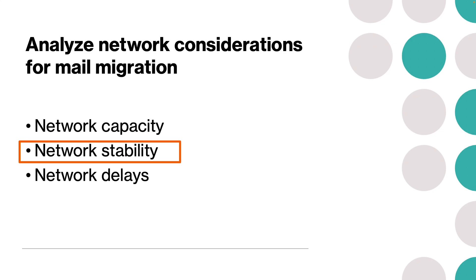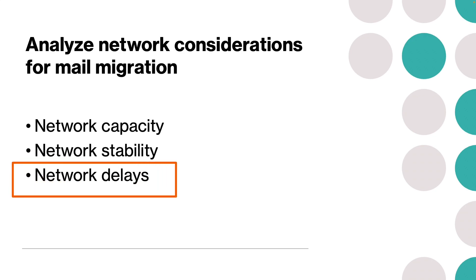The last consideration is network delays. Best practices for network delays include evaluating your network delays to all potential Microsoft data centers to help ensure consistent results and a consistent experience for end users. Work with your ISPs to address internet-related issues and add IP addresses for Microsoft data center servers to your allow list, or bypass all migration-related traffic from your network firewall.